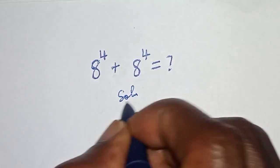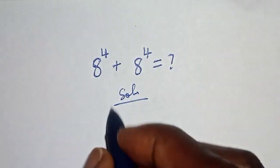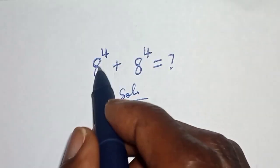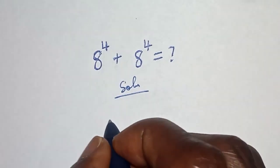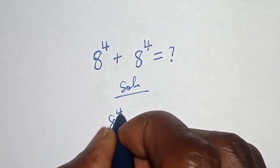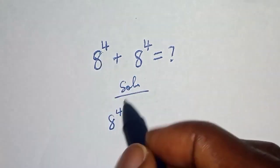Solution: If you look at this, 8 raised to power 4 is common. Let's factor it out. It is 8 to the power 4, then this divided by this is 1, plus this divided by this is 1.